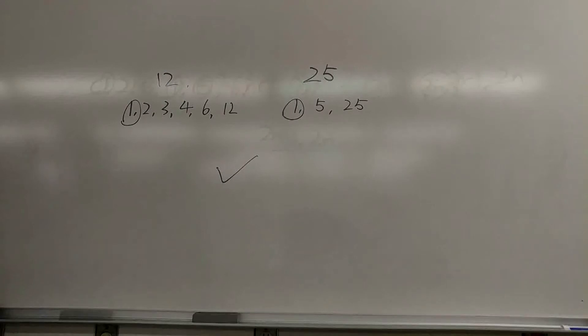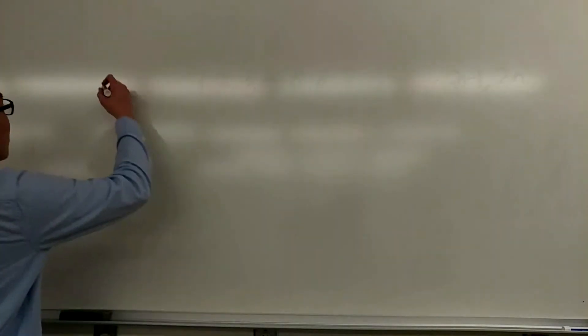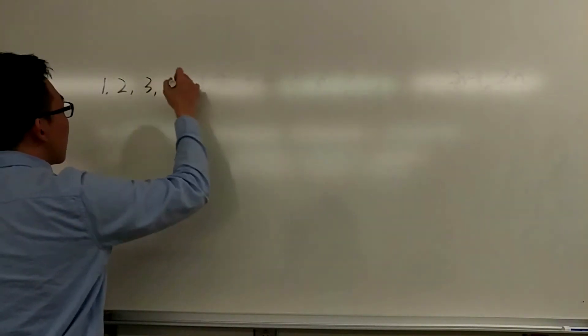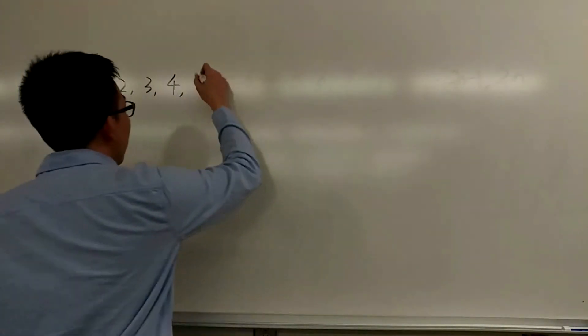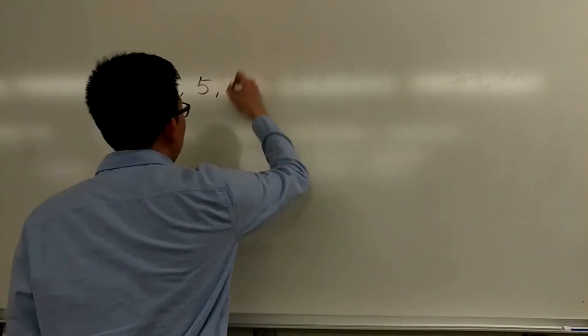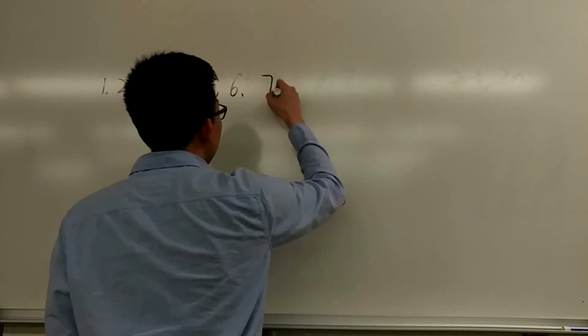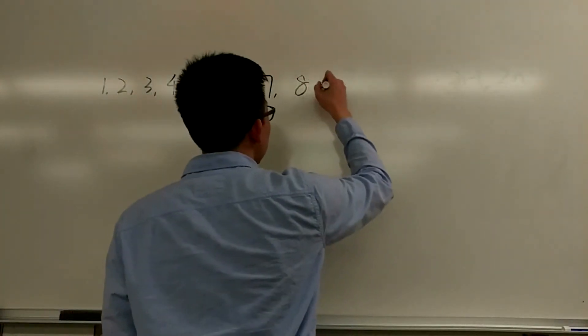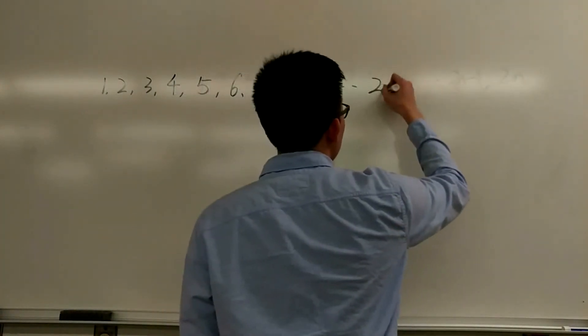First, we can write two N integers from one to two N: one, two, three, four, five, six, seven, eight, dot dot dot, two N minus one, and two N.